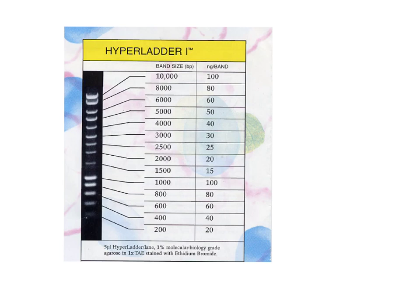But first we'll have a look at the molecular weight standard that we ran on the gel. Now these are DNA fragments of known molecular weight and we can see it's a commercially available one called Hyperladder 1, and there are DNA fragments from 10,000 base pairs to 200 base pairs.